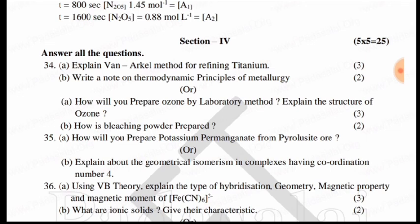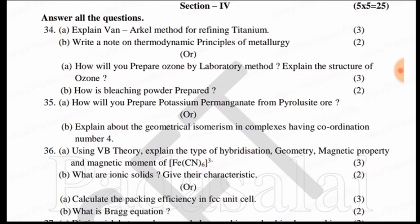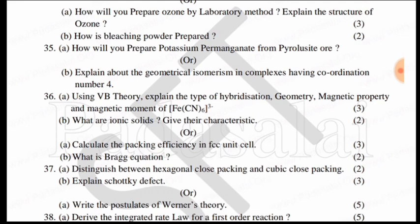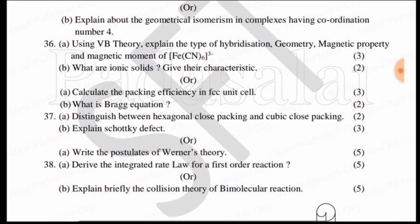Thermodynamic principle of metallurgy is very important. Ozone lab preparation, bleaching powder, potassium permanganate from pyrolusite ore - this is how important it is. After 36A is very important. After B is very important.